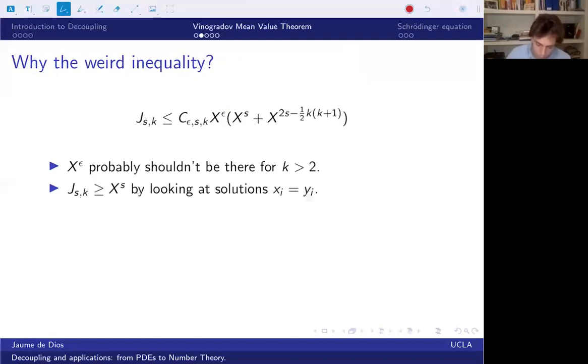And then for the X to the s, we have a very particular kind of equations, which are called diagonal solutions. You just pick each x and put it equal to each y. And then, of course, you're going to have that sum of xi to the k equals sum of yi to the k. Because xi is equal to yi. And we have X to the s solutions like this because we have x variables. We have x1 up to xs. And each of them belongs on zero to big X. And therefore, we have at least by a combinatorial argument, we have at least X to the s solutions all the time.